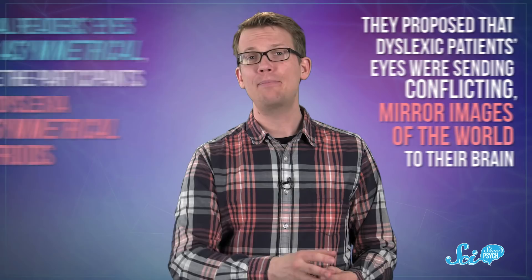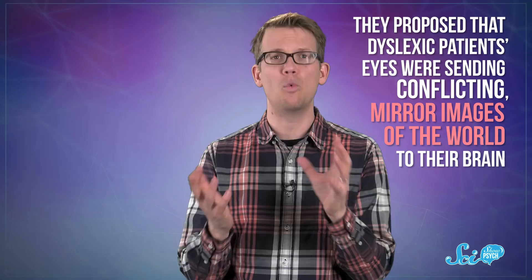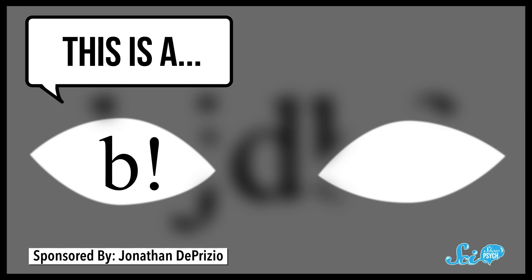The example they gave was that the left eye might be saying, this is a B, while the right eye is like, no way, man, that's obviously a D. And the researchers suggested that their discovery could lead to new treatments for dyslexia involving the eyes.